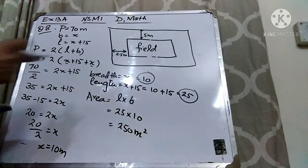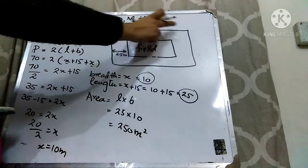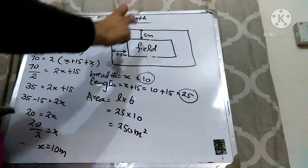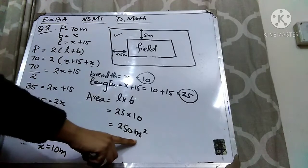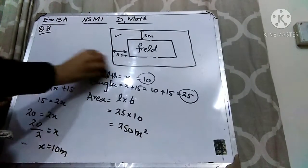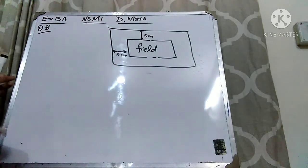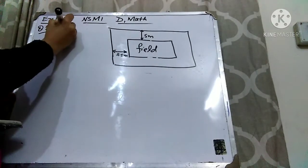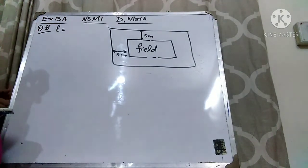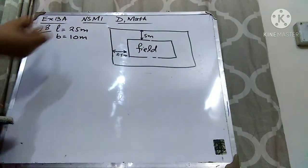So now we have found the area of this rectangular field. Now to find out the area of this path, we have to find out the area of the whole figure. Then if we subtract the area of the field from this whole figure, we will find out the area of this path. So now I am going to find out the area of the whole figure. Length of the field was 25 meters and breadth was 10 meters.